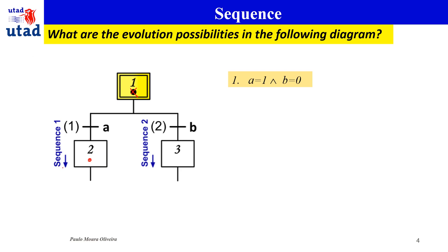But if you have the other situation where you still have step 1 active, and in this case you just have B equals to 1, then transition 2 is going to be cleared and the token is going to pass to step 3, and sequence 2 is selected.